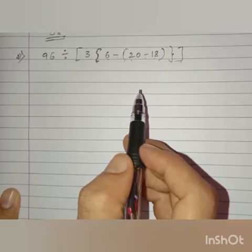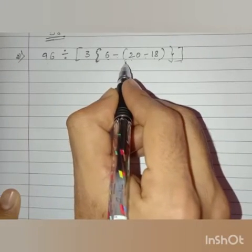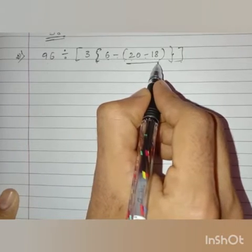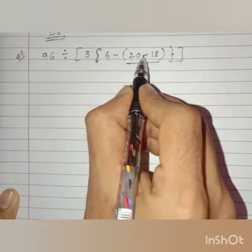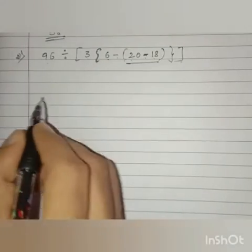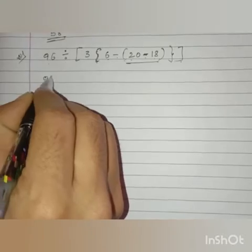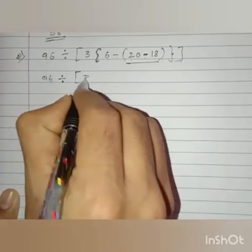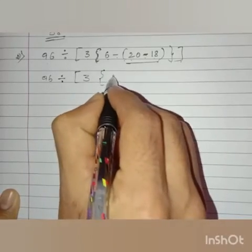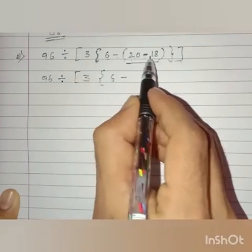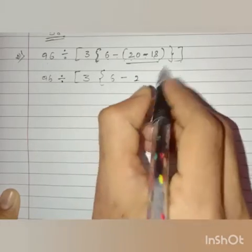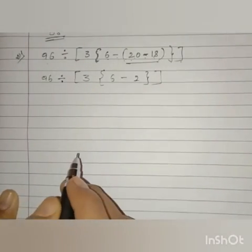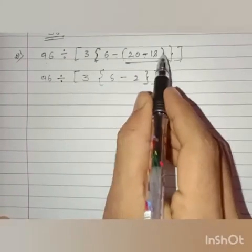We have a small bracket here. The operation inside the common bracket is subtraction, so we have to do subtraction and write the rest as it is. So 96 divided by big bracket, as it is, 3 curly bracket, 6 minus — now 20 minus 18 is 2. Curly bracket close, big bracket close.